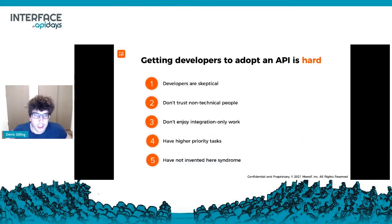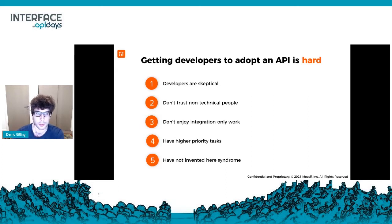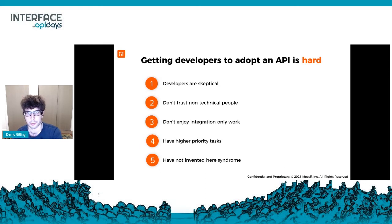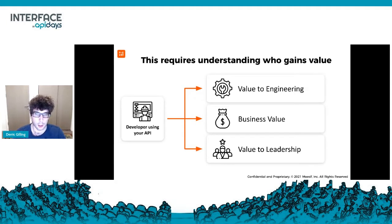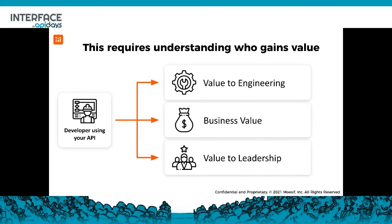Why is it so hard to align these metrics, and why is it so hard for developers to start using your platform? First, developers are skeptical — they don't like to trust non-technical people, especially sales folks, and they hate doing integration work. They usually have a lot of different items on their plate and want to build things themselves. But it's not just about developers themselves. A typical developer who signs up and starts integrating with your API is doing this not just for themselves, but to create some business value at their organization — setting up payments, text messages, or something else with the platform.